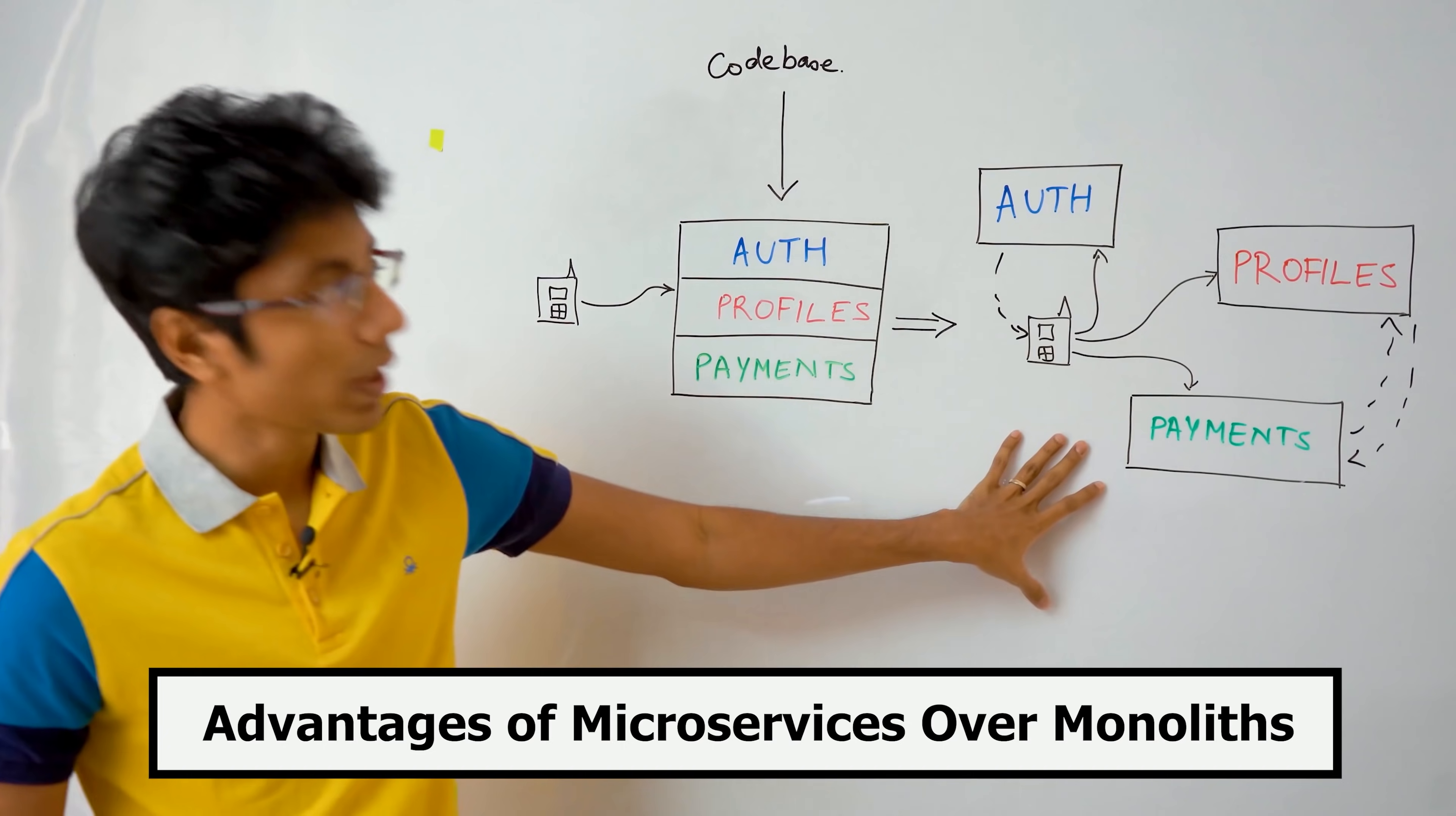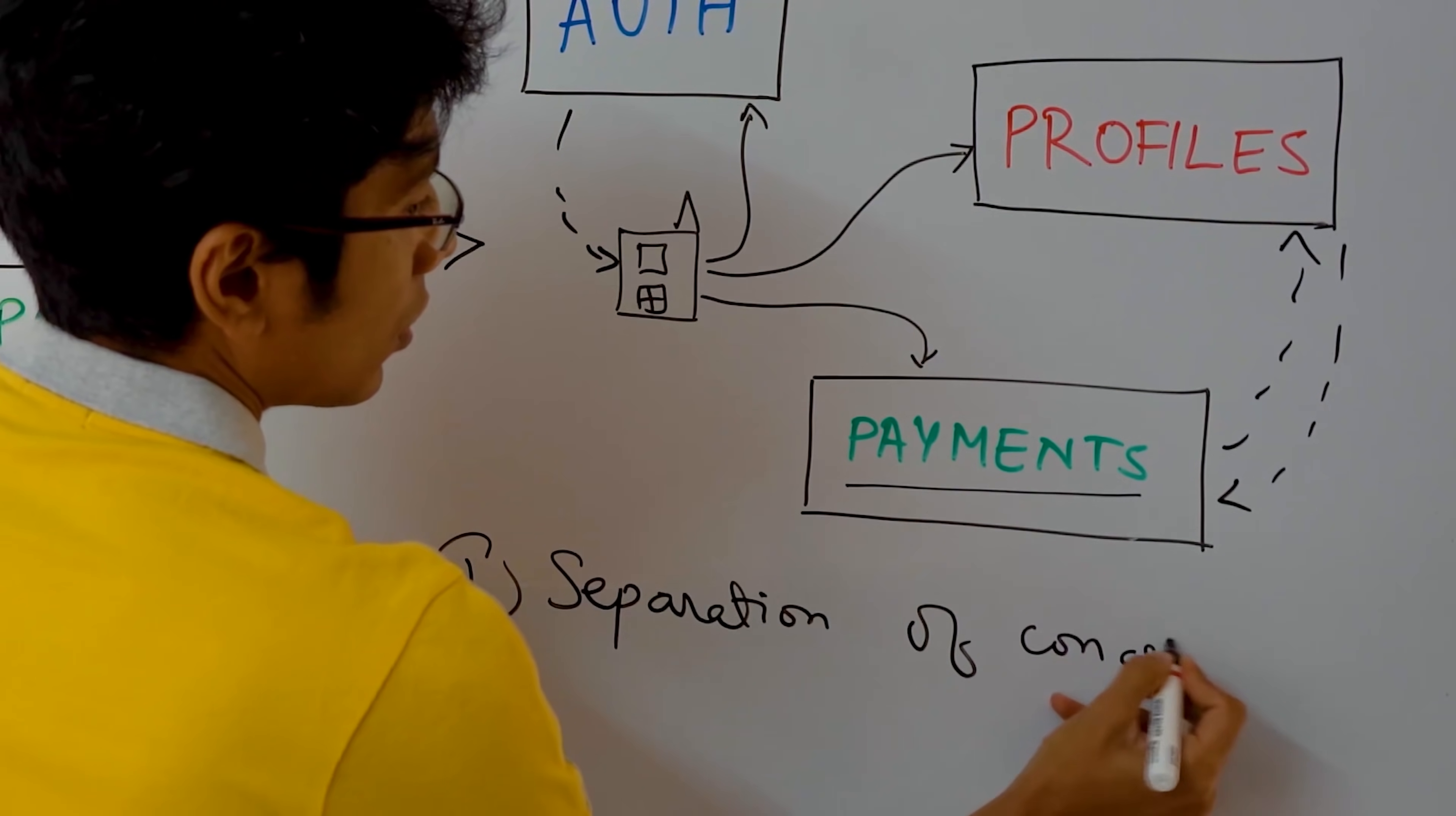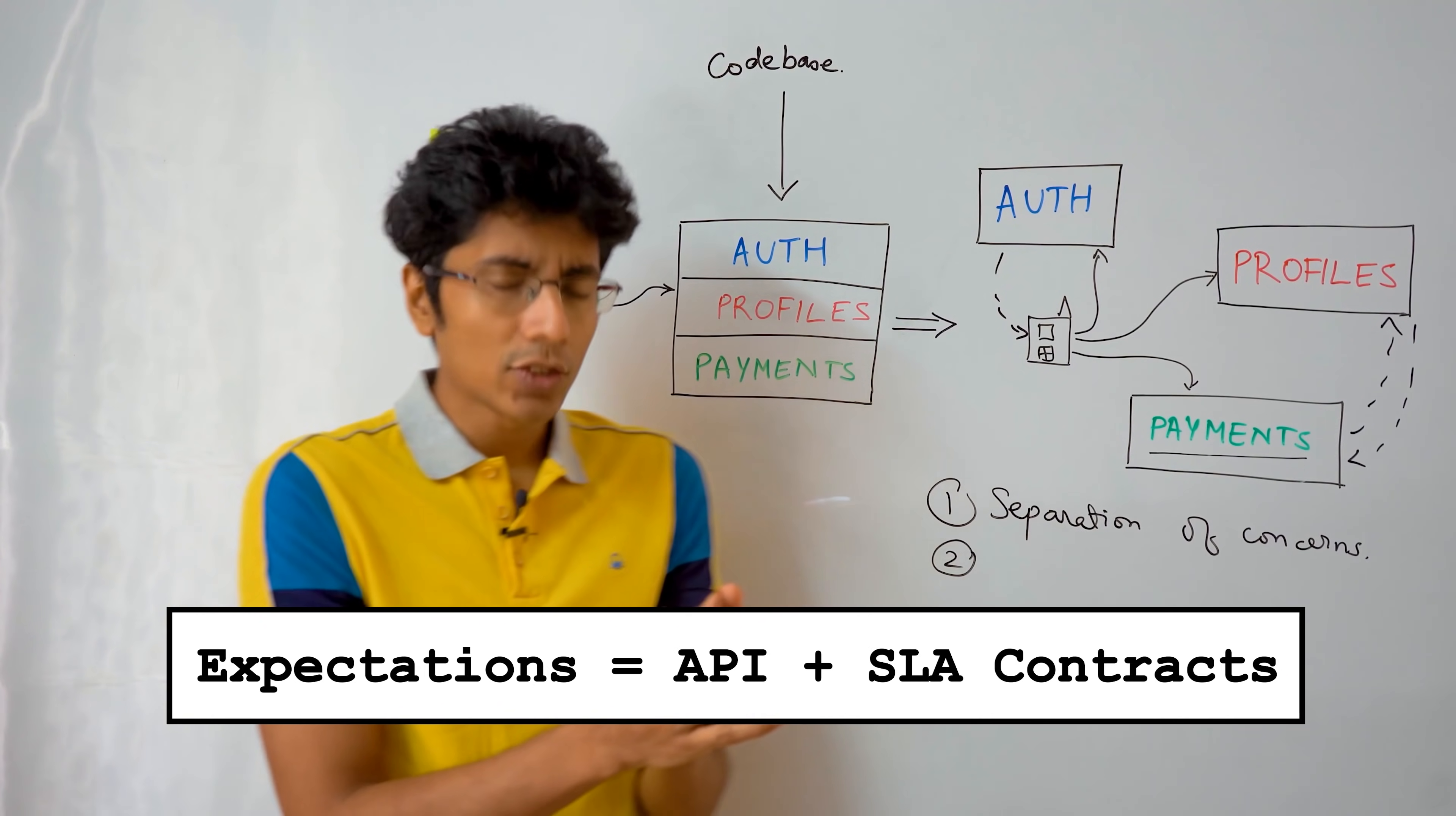As you can see there's quite a few advantages that microservices have over monoliths. The first one being that if you need to make any feature change, let's say your payments now need to also accept PayPal payments, all you need to do is just go to this payment service and make the change. So there's a good separation of concerns. The second one is coding in microservices is sometimes easier because all you need to worry about when you're making a feature change is just the code which exists here. So your expectations are well defined in the payment service. Your responses are well defined and that's all you need to care about.